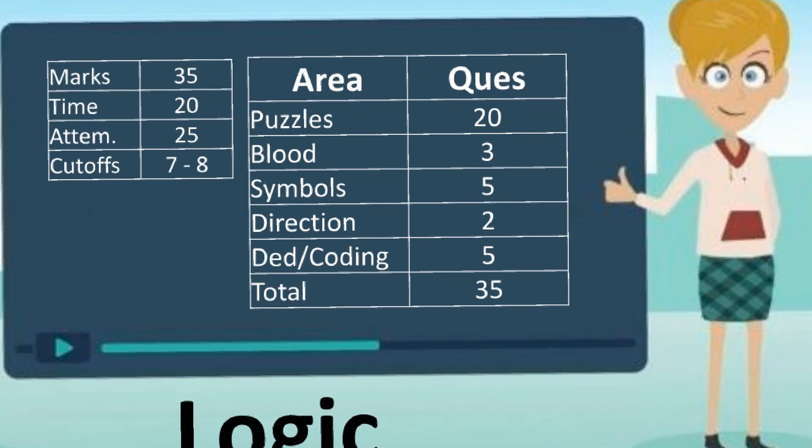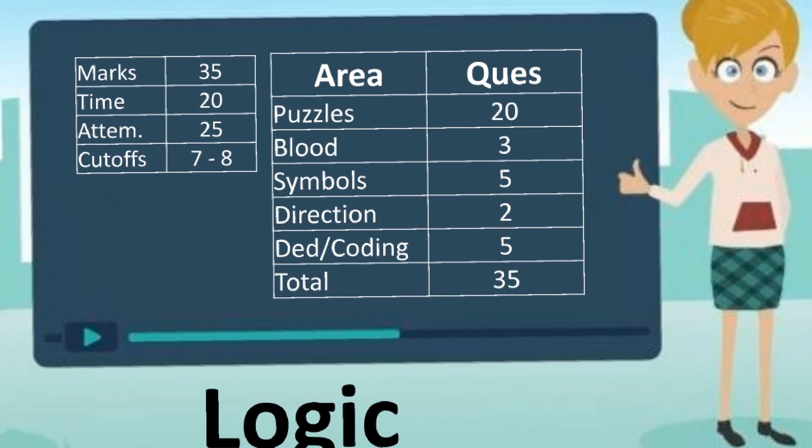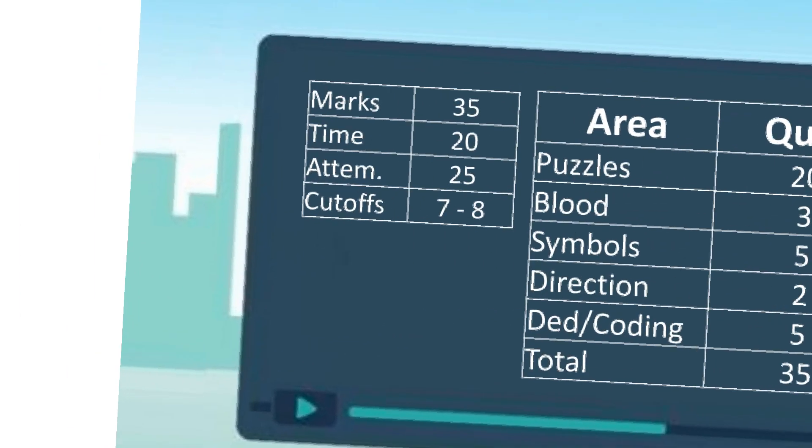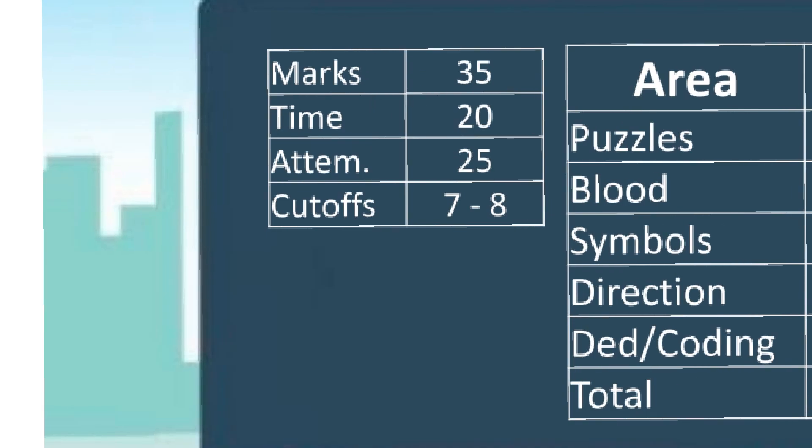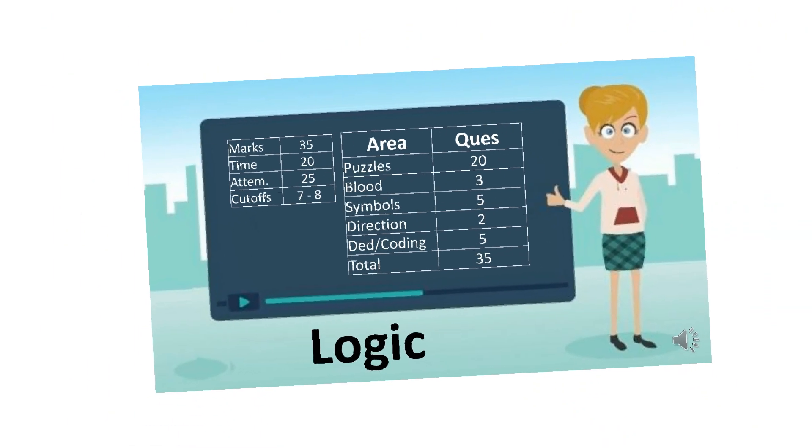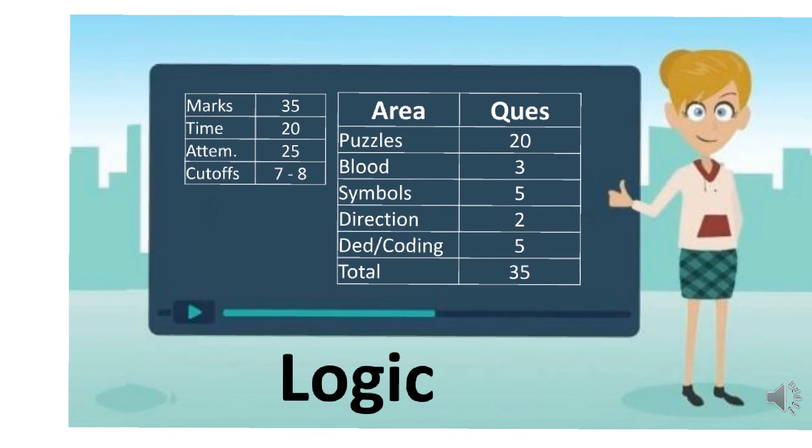Moving to the logic section - puzzles, blood relationships, word interactions, deductions, coding will all come. Again, keep puzzles for last because puzzles are heavy. All these bank PO exams are famous for difficult puzzles because they know logic section is Indians' strength, so cutoff will always be high. You have to perform well. So overall 35 marks, time 20 minutes, attempt should be 25, cutoff will be around 7-8.